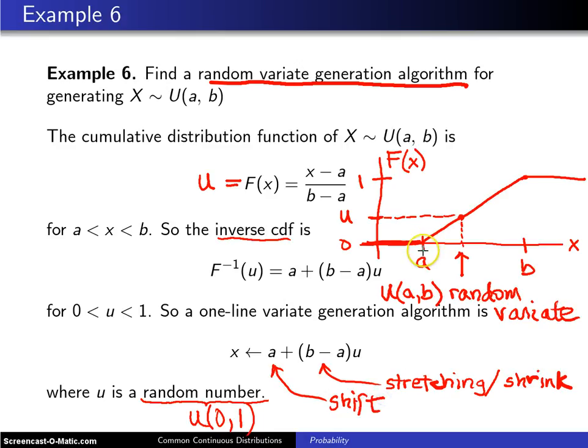So again what happens is you start out with something that's uniformly distributed between zero and one. And then you stretch it or shrink it to where it will now fit in an interval of this length. And then finally you add a to move that out from the origin. And that will give you a random variate that has the uniform distribution between a and b.